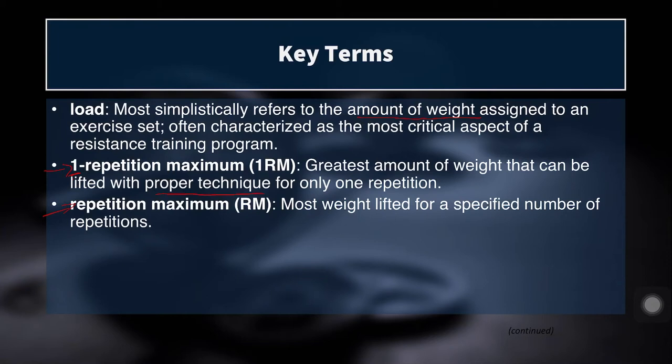A repetition maximum — note there's no '1' at the beginning here — is the most weight lifted for a specified number of repetitions. So you could have a 5 rep max, a 10 rep max, or a 3 rep max. It's important to keep track of those rep maxes. Usually people keep track of their 1 rep max, 3 rep max, 5 rep max, and 10 rep max — those are the most frequently used. Just 1, 3, 5, and 10 is usually enough to be able to program effectively.